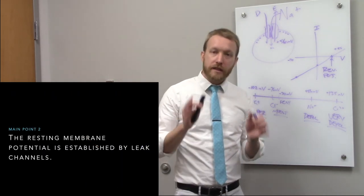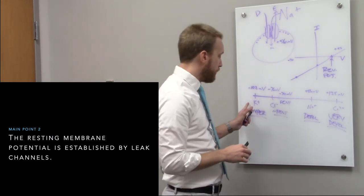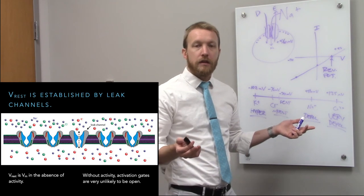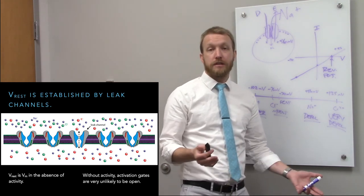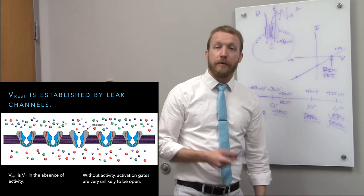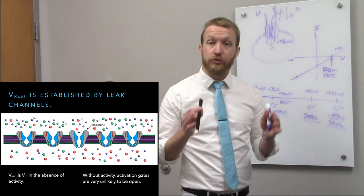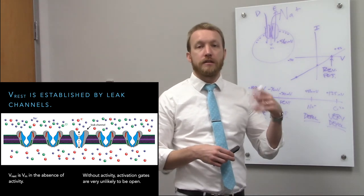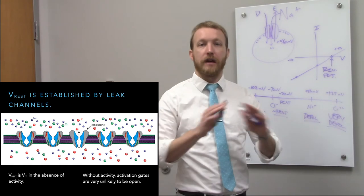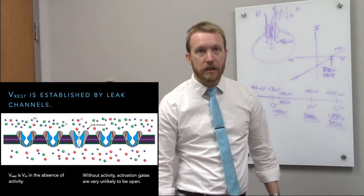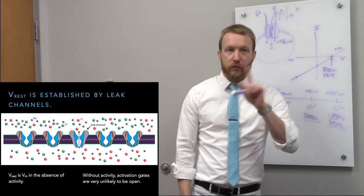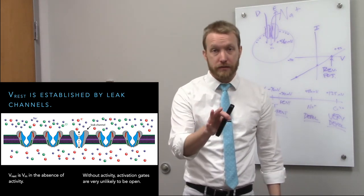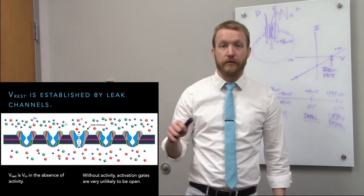When considering the resting membrane potential, you can't think about just one ion at a time — they're all moving across the membrane to some degree. At true rest, a neuron isn't firing an action potential and isn't receiving input, so only leak channels are open. There are no voltage-gated channels active and no ligand-gated channels responding.